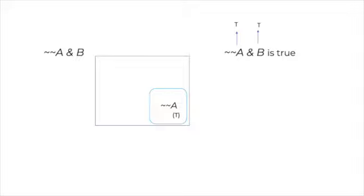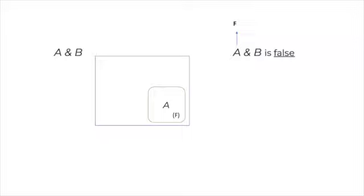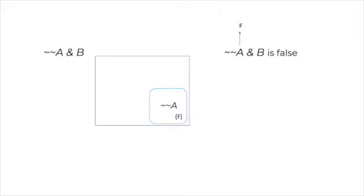But what if X is false instead of true, and we substitute Y with an equivalent sentence Z? Well, the resulting sentence will be false. So assume now that A is false. The valuation rule for the ampersand tells us that A and B as a whole is false. We substitute A with the equivalent not-not-A, and the resulting sentence, not-not-A and B, is also false.